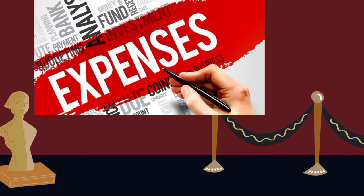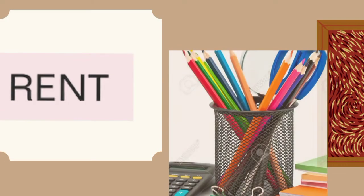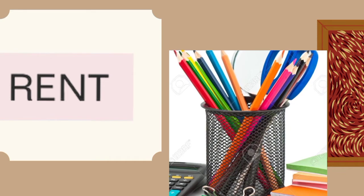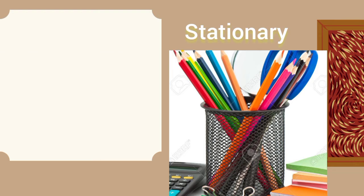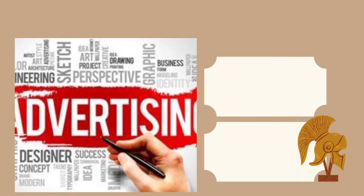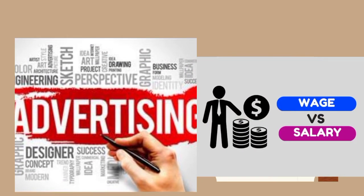Expenses refers to the things you need to spend to acquire some items in the business, and it is to be debited also. For example, rent is to be debited. The next is stationery — things you use, like your writing tools, papers, and the rest. Stationery is to be debited. These are classified under expenses.